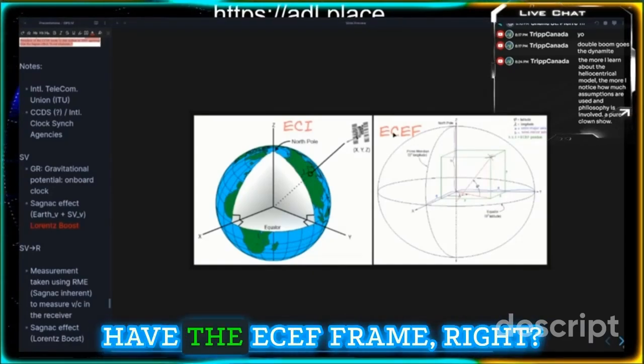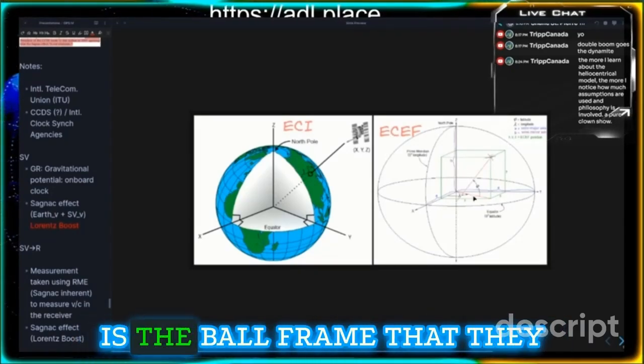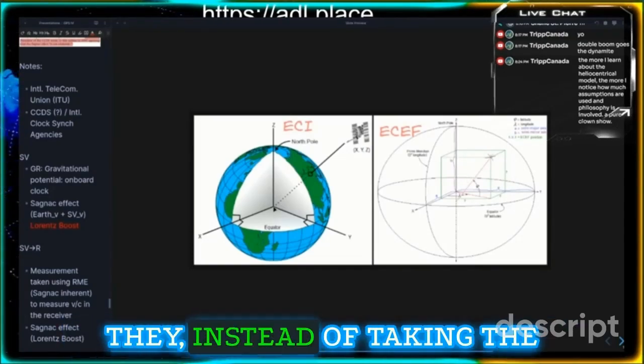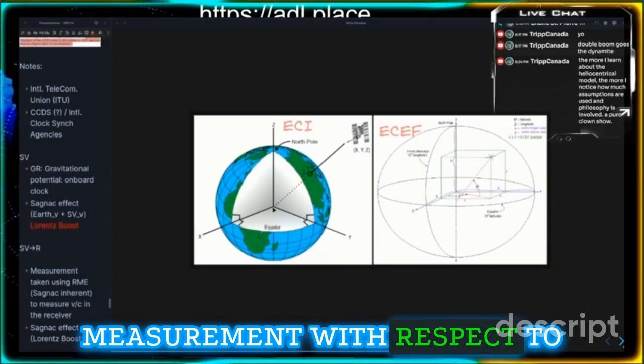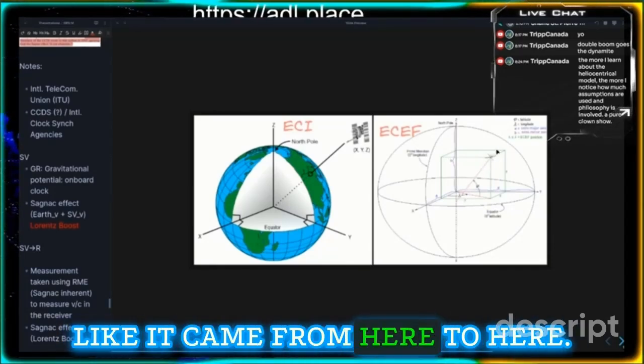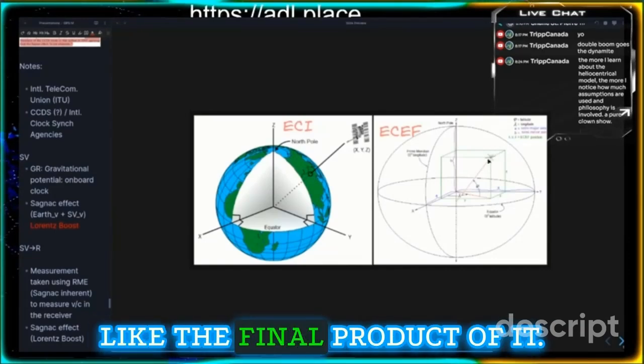And then we have the ECEF frame, right? That's where they say this is the ball frame that they live on where they rotate. Instead of taking the measurement with respect to an absolute frame, they put it on the ground receiver and act like it came from here to here. This is like the final product of it.